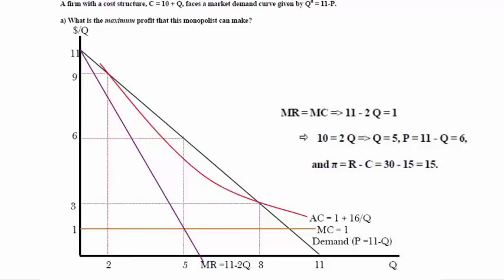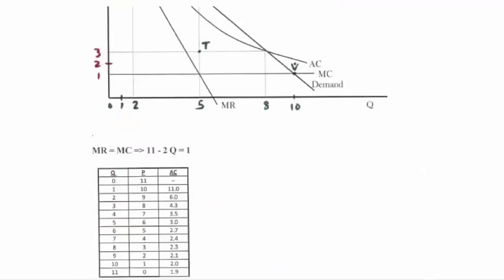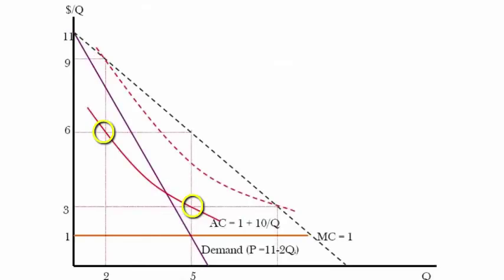We want to sketch the new average cost curve. We can use our table here to determine what the average cost would be for fixed cost equals 10. When Q equals 1, 10 over 1 is 10 plus 1 equals 11. At Q equals 2, 10 over 2 is 5 plus 1 equals 6. At Q equals 5, we get 3. At Q equals 10, we get 10 over 10 is 1 plus 1 equals 2. So we see the negatively sloped average cost curve. What is important is whether the new average cost curve lies below the marginal revenue curve at any point.